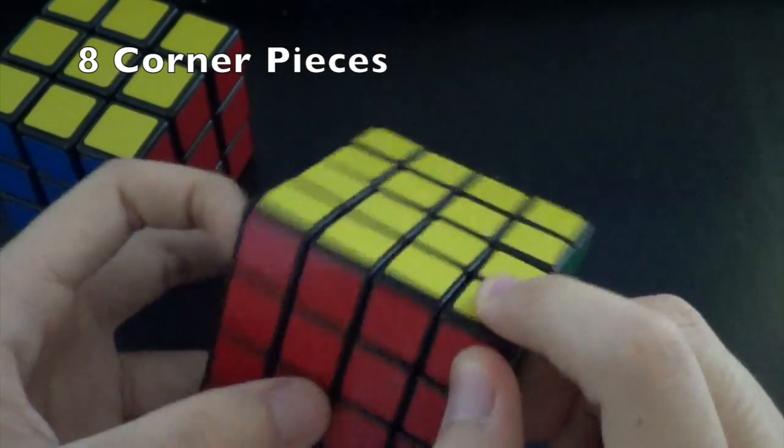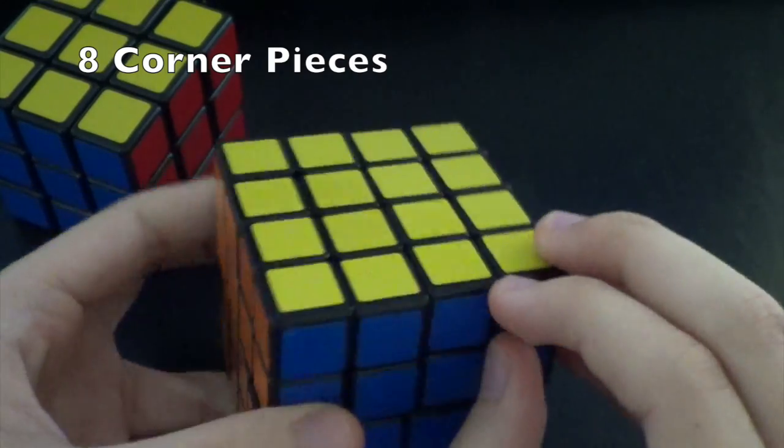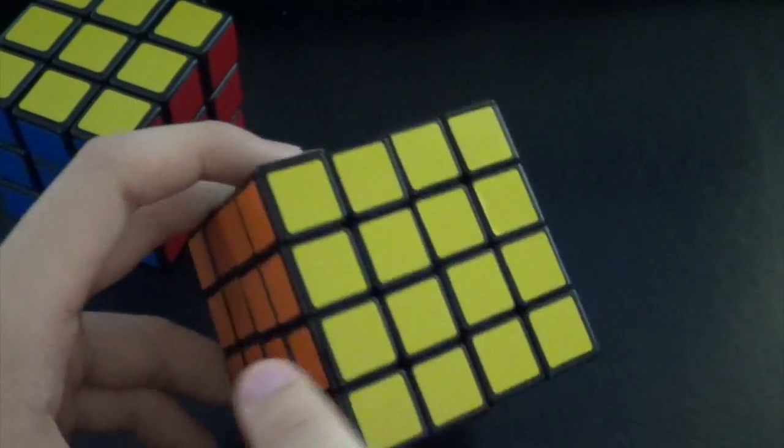And lastly, still 8 corner pieces, as there's still 1 piece each, 4 down here, 4 up here.